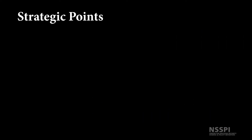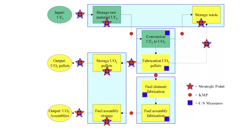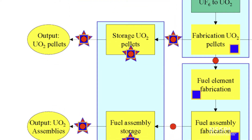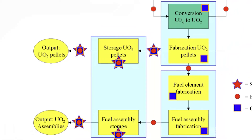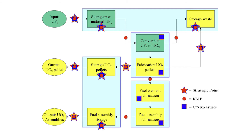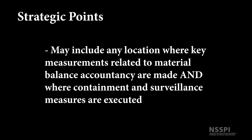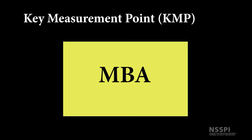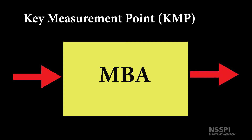A strategic point is a location selected during examination of design information where, under normal conditions and when combined with information from all strategic points taken together, the information necessary and sufficient for the implementation of safeguards measures is obtained and verified. A strategic point may include any location where key measurements related to material balance accountancy are made and where containment and surveillance measures are executed.